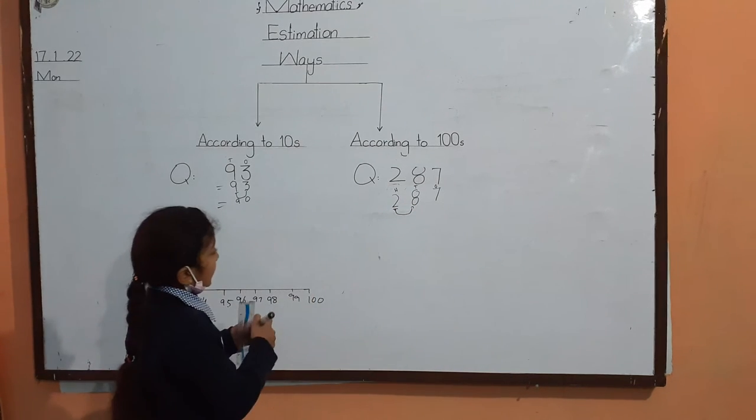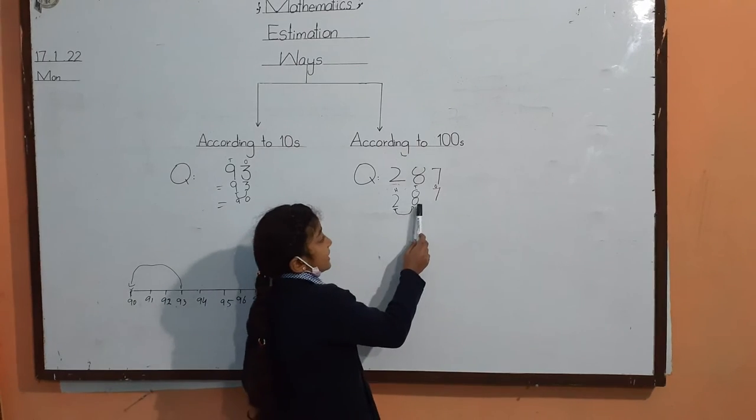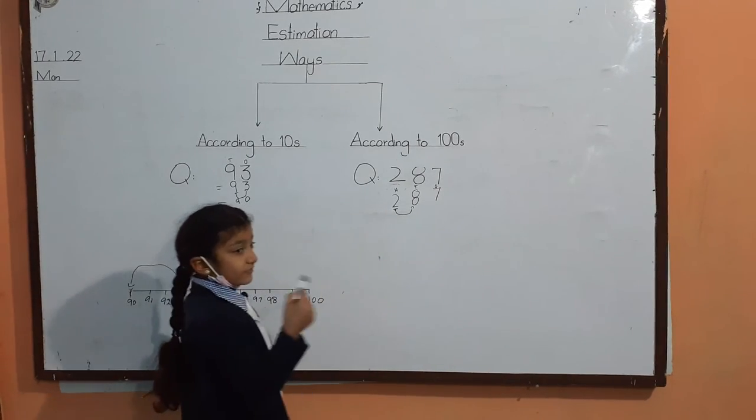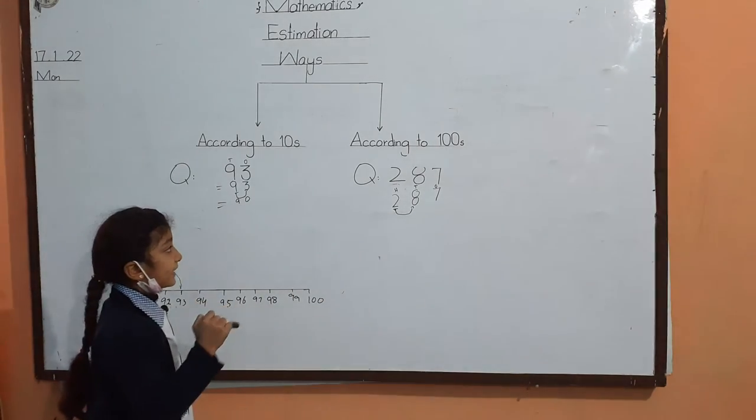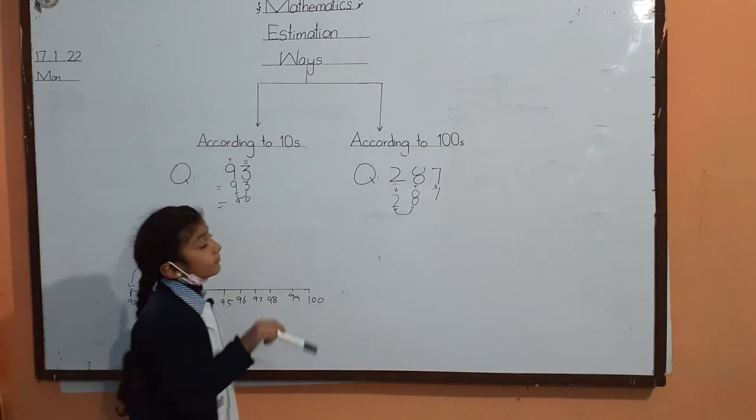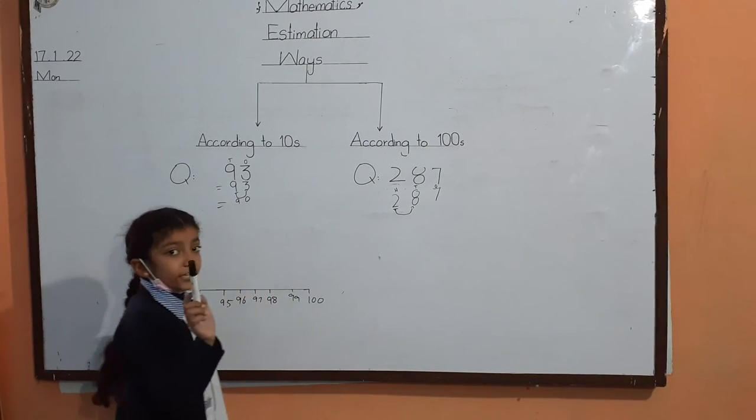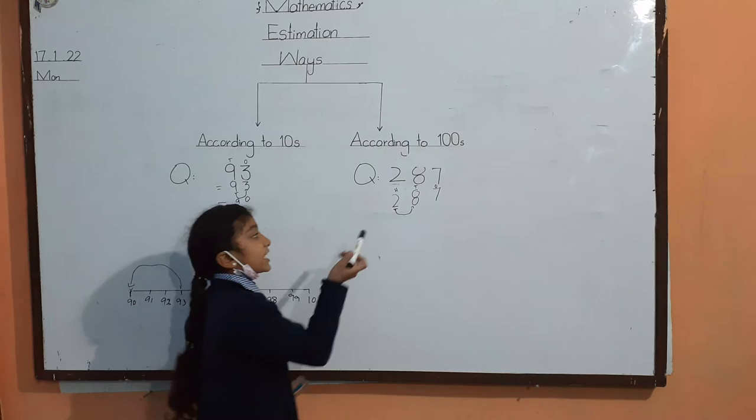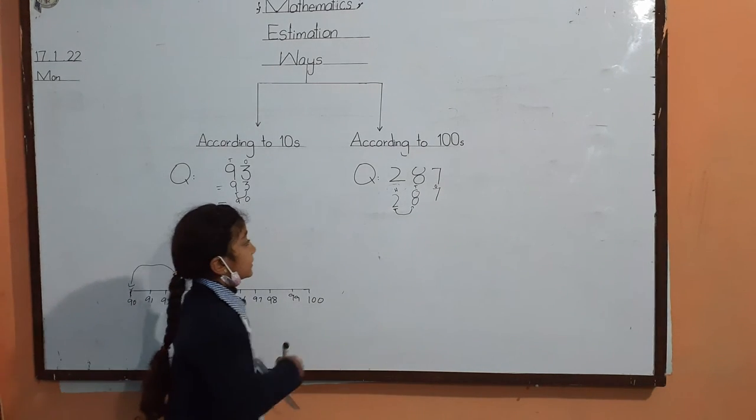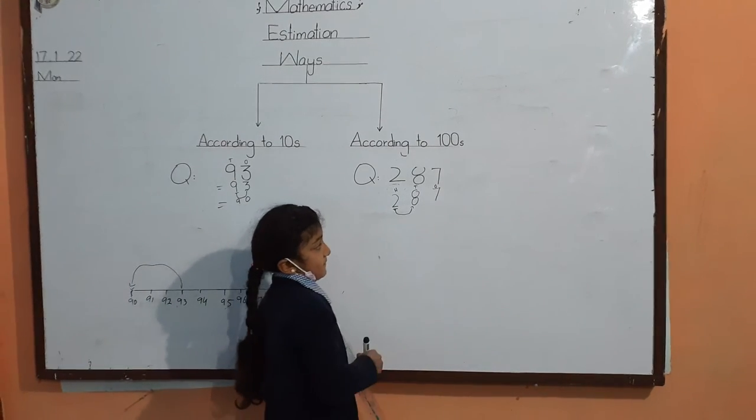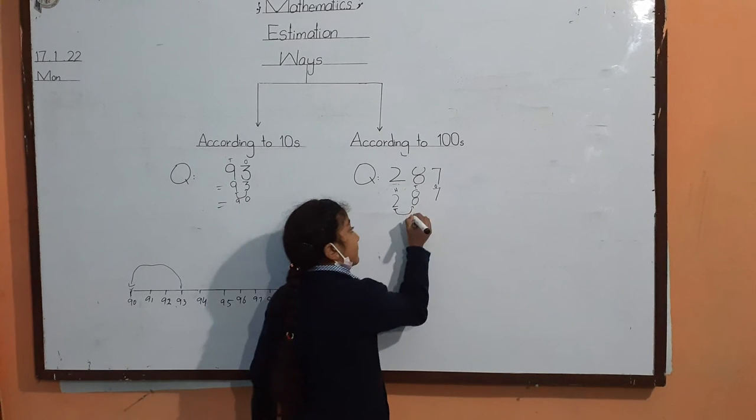We will see whether this digit is less than 5 or greater than 5. If it's less than, we write as it is. If it's greater than, we will add 1 to it. This is greater than 5. So we will write here, nine.